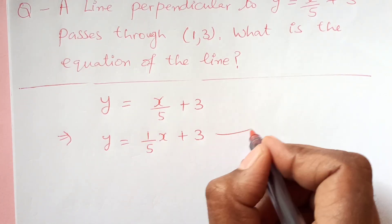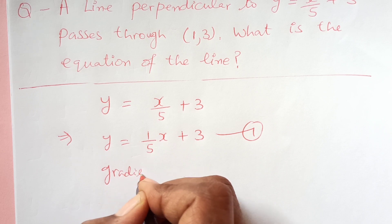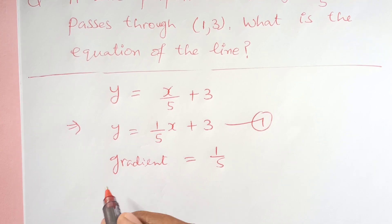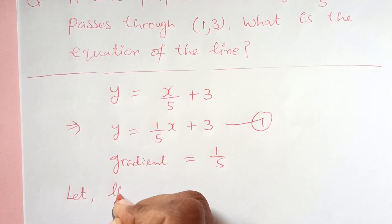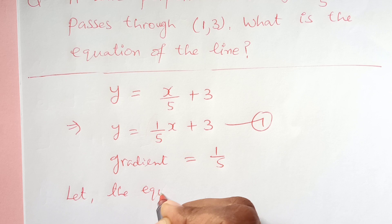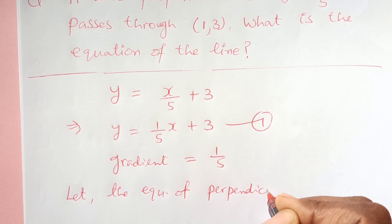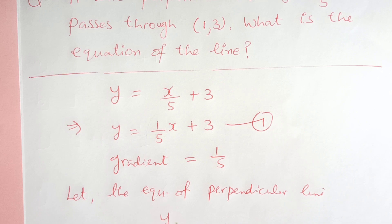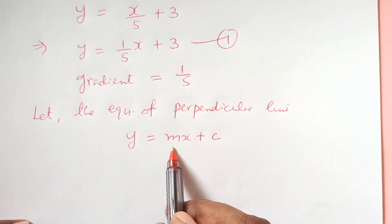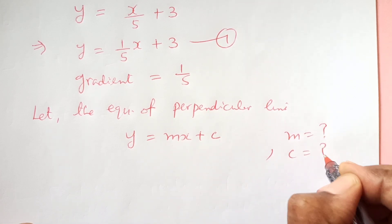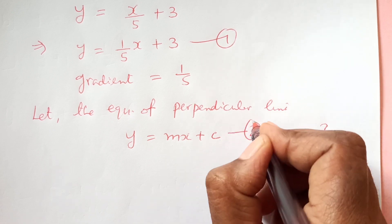What is the gradient of this line? The gradient is equal to 1/5. Now let the equation of the perpendicular line be y = mx + c. We need to find m and c. This will be equation number 2.